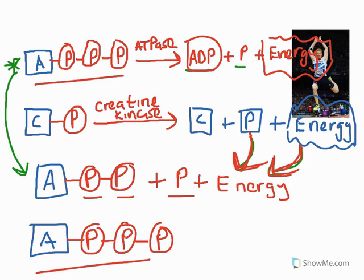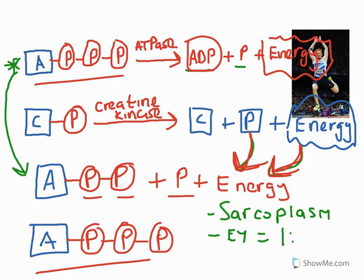A couple of extra points: first, where this reaction happens — this reaction occurs in the sarcoplasm, which is the fluid of the muscle cell. Make sure in every question you answer on the phosphocreatine system, you reference that it occurs in the sarcoplasm. Second, the energy yield is 1 to 1 — for every 1 creatine phosphate, we get 1 ATP. The fuel source is creatine phosphate.